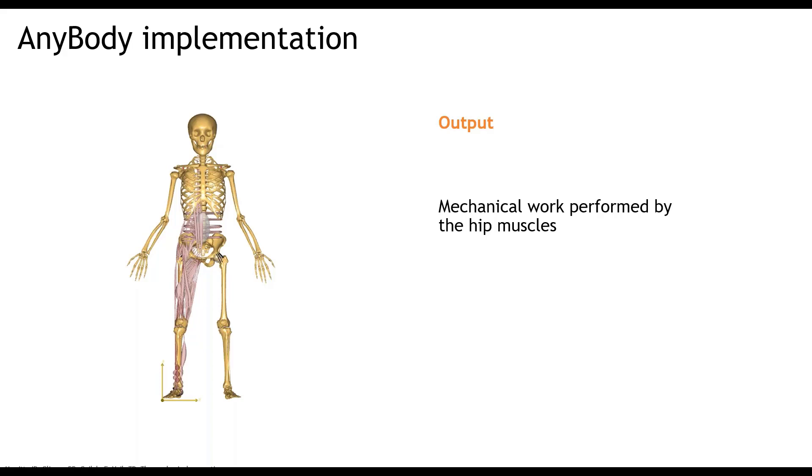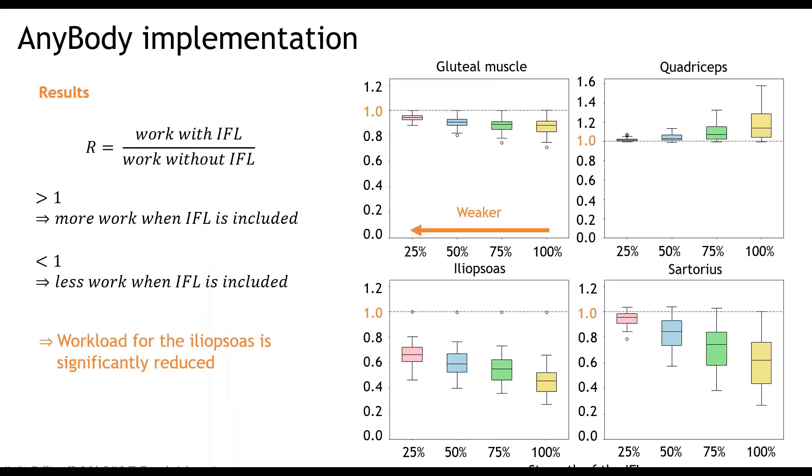After running the inverse dynamics study, we studied the mechanical work of the muscle groups around the hip joint. For an easy comparison, we defined a ratio R. This is the ratio between the required muscle work for a muscle group when the IFL was present in the simulation, and the required muscle work for a muscle group when the IFL was not present in the simulation. This means that if this ratio is larger than 1, more work is required from this muscle group when the IFL is included. If this ratio is smaller than 1, this means that less work is required from a muscle group when the IFL is included.